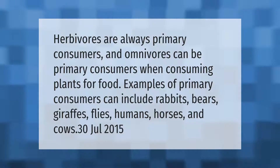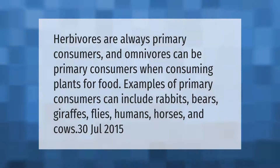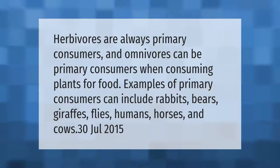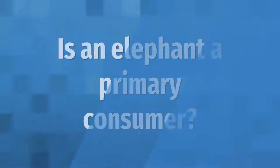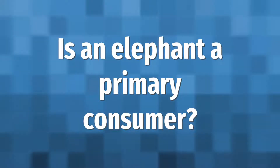Herbivores are always primary consumers, and omnivores can be primary consumers when consuming plants for food. Examples of primary consumers can include rabbits, bears, giraffes, flies, humans, horses, and cows.